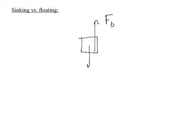Sinking versus floating: Let's start with a free body diagram of an object in a fluid. Whether submerged, floating, or partially submerged, the object always feels two forces: buoyant force upward and gravity downward. An object will sink if the force of gravity is greater than buoyancy. It will float if the force of buoyancy is greater than or equal to gravity.